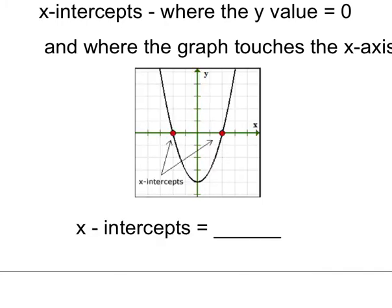These are the X-intercepts. This is the X-axis, the X-intercepts. The X value here is negative 2, 0. The Y value is 0 because it doesn't go up. And then this little point right here would be 2, 0. So it has 2 X-intercepts.